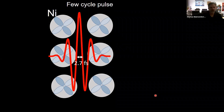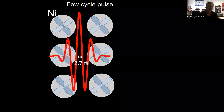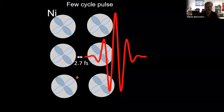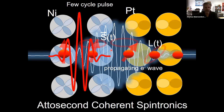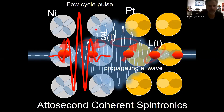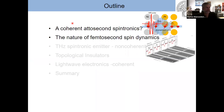A spintronic device could look like this: a few-cycle pulse with oscillations of the light at 800 nm center wavelength has an oscillation period of 2.7 femtoseconds — that is your clock speed. This launches a coherent electron wave on the femtosecond timescale that propagates through the ferromagnet. You can make it more complicated by adding another material. This coherent light wave drives electron redistribution of magnetism at the femtosecond timescale, well beyond the ~50 femtosecond timescales observed so far in ultrafast magnetism.